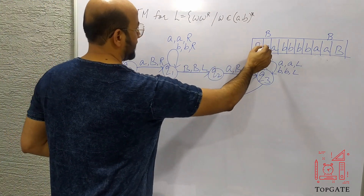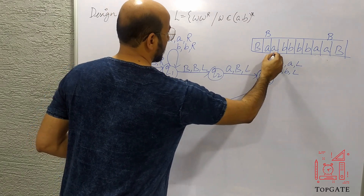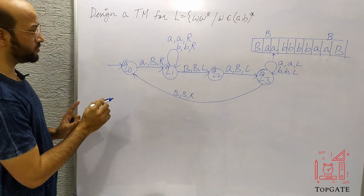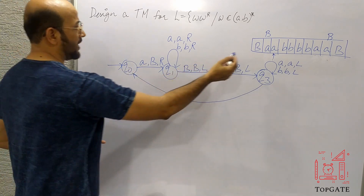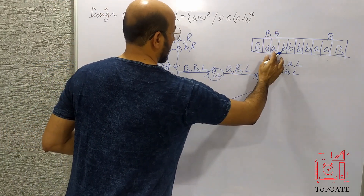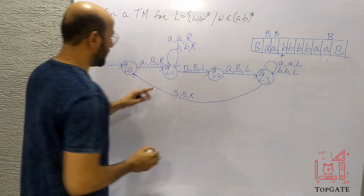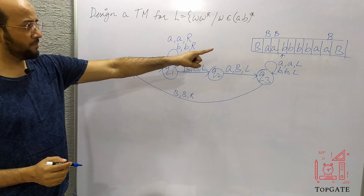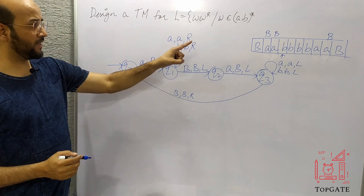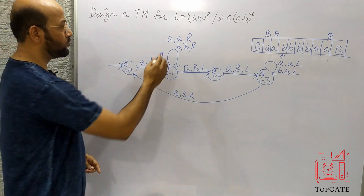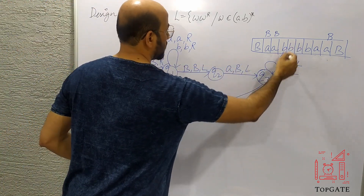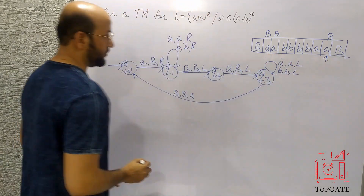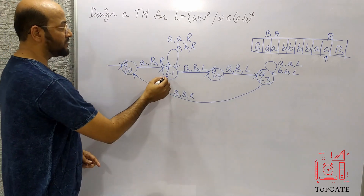Back at Q0, the pointer is now on the next A. The machine knows: if you find A, change it to blank and move right to Q1. So this A is changed to blank and the pointer moves right to B. At Q1, all the A's and B's are skipped until the pointer stops at the B that was formerly the last A — now converted to blank — and the machine remains at Q1.